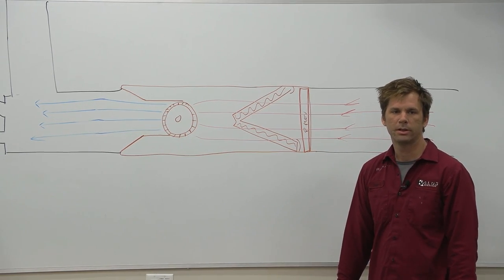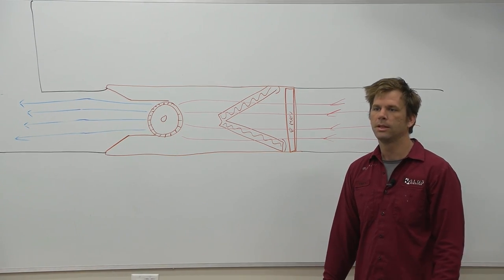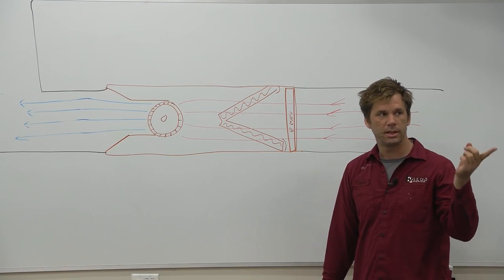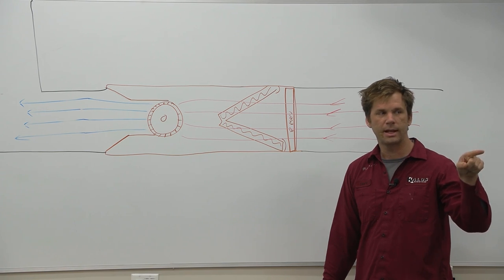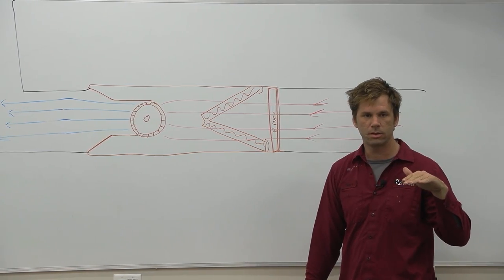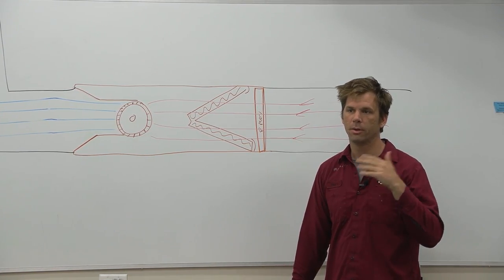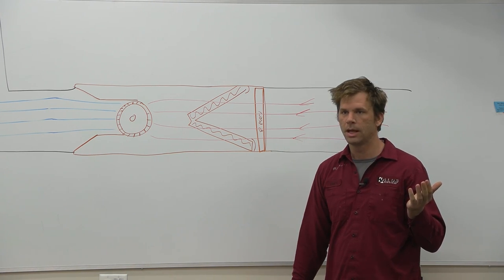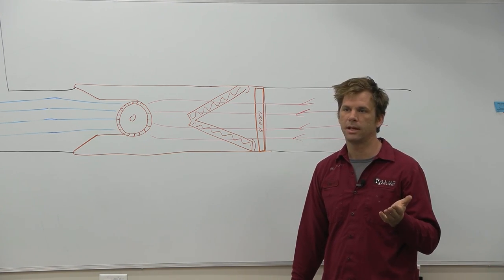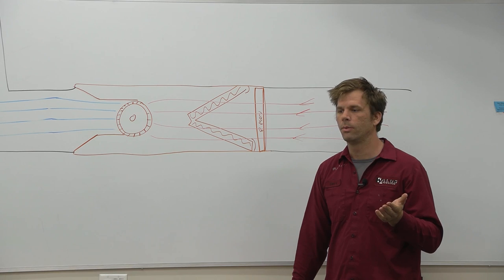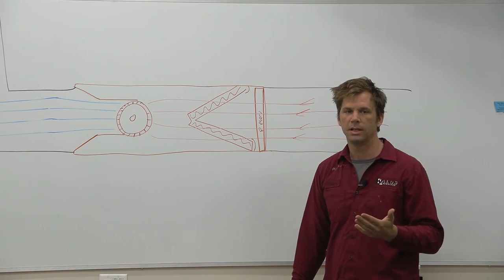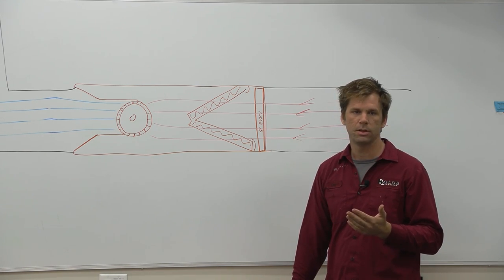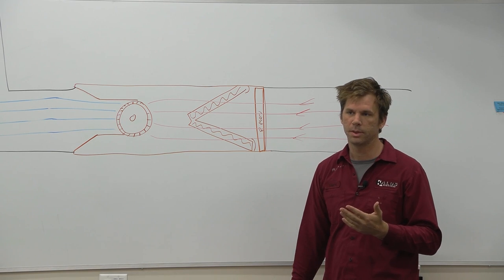Our external static pressure is taken above the filter and then on the outlet before the rest of the ductwork. This is measuring just our system as it would come from the manufacturer. You'll see external static pressure listed on your data tag. It'll tell you what the manufacturer used to test and get all of their performance data. You'll see external static pressure used when you're looking for setting blower speeds.